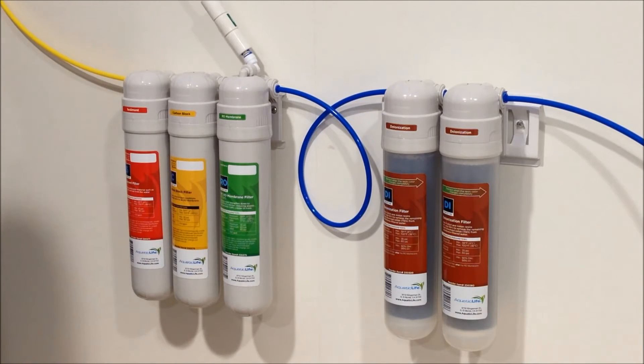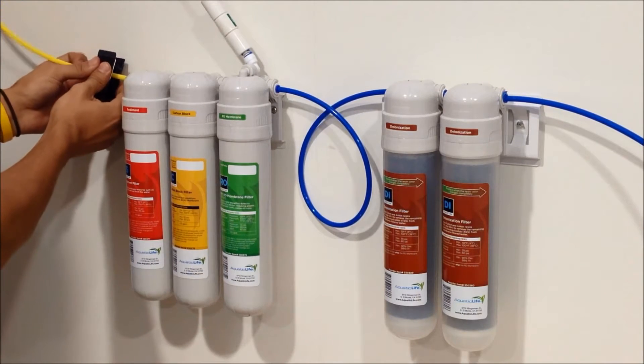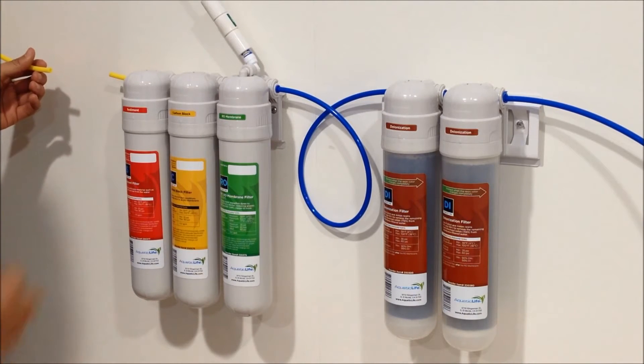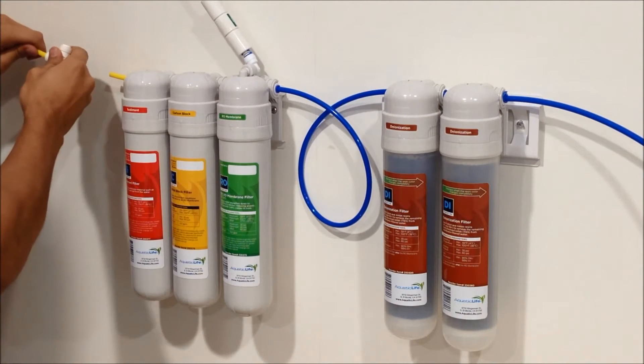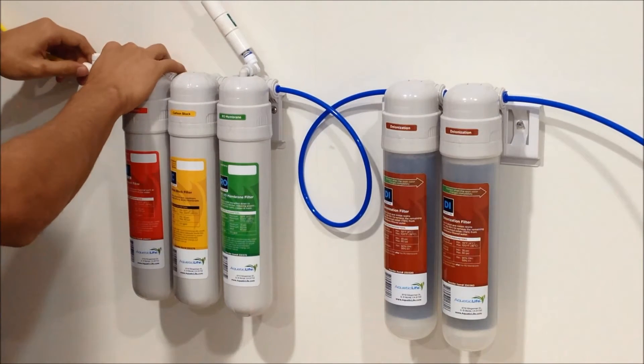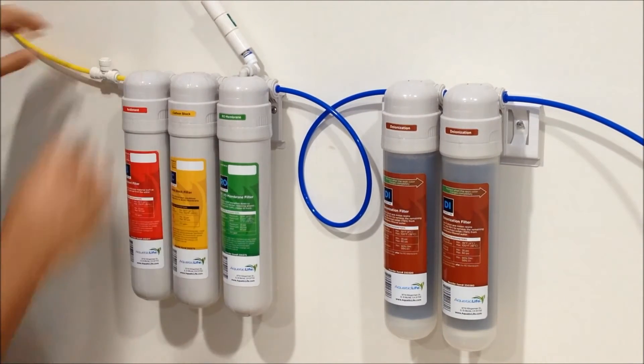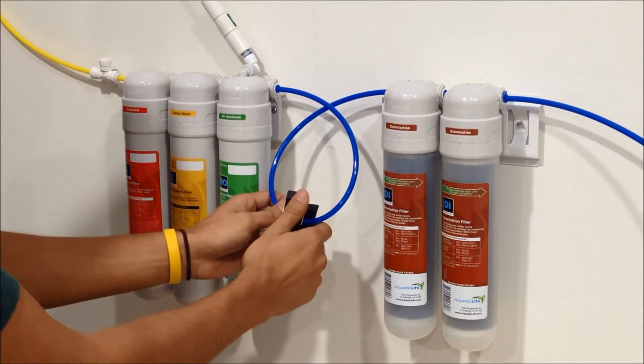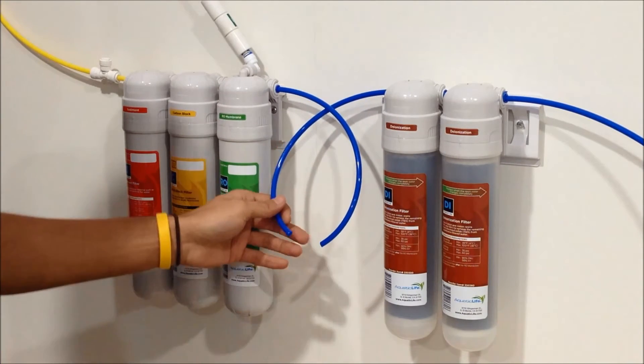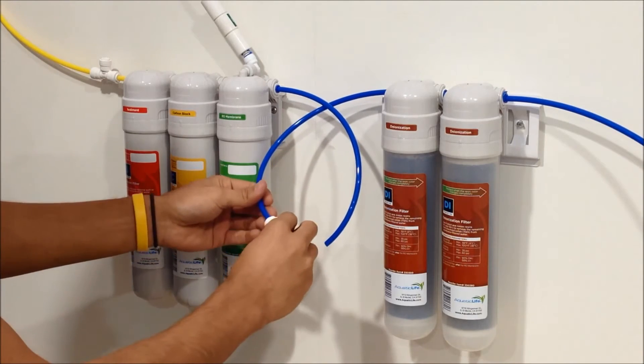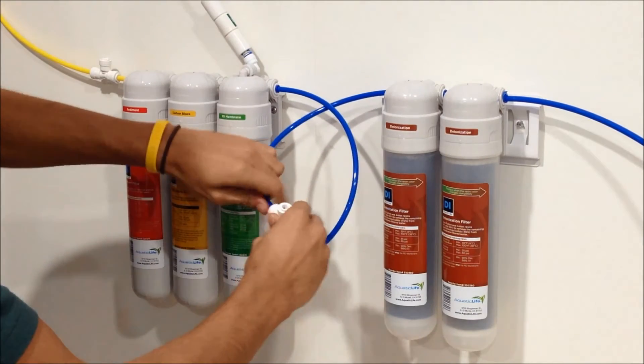So what we're going to do is we're going to cut the supply line, take a fitting, put that in, then go ahead and install it here. Then we'll do the filtered line. Go ahead and cut that down here. Take the other fitting that it comes with and install that there.